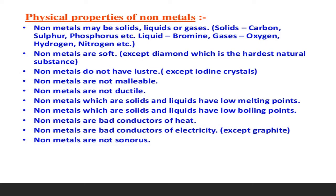Now let us start with the physical properties of non-metals. The first thing that comes to mind is the state in which non-metals are present. Non-metals can be present in all three different states — solid, liquid, and gaseous. Here you can see some examples in different states of matter. The next point is that non-metals are soft, except diamond. Diamond is one of the forms of carbon and it is the hardest natural substance known to us.